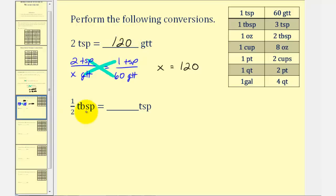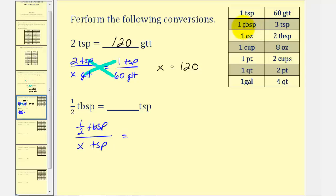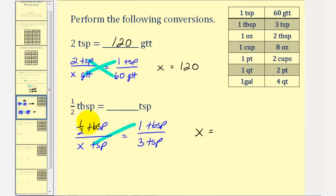Next we have half a tablespoon equals a certain number of teaspoons. So now we'll have two ratios comparing tablespoons and teaspoons. One half a tablespoon to an unknown number of teaspoons, let's say x teaspoons, must equal — looking at our conversions — one tablespoon equals three teaspoons. Notice that tablespoons are on top, so we'll have one tablespoon to three teaspoons. Now we cross multiply to solve for x. X times one, which is x, must equal one half times three, that would be three halves.